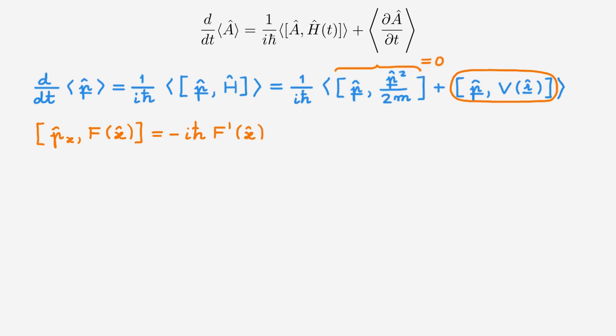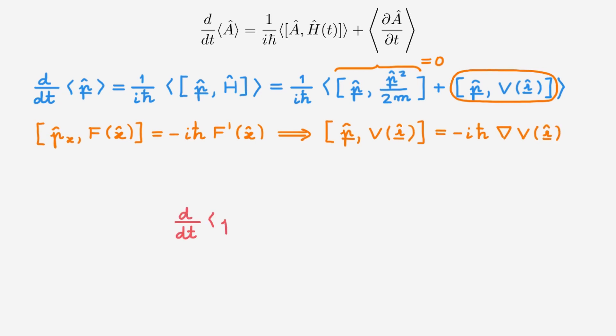Using this result, in our case the commutator between p and the potential V is equal to −iℏ times the gradient of the potential. Going back to the time derivative of the expectation value of the momentum operator, we find that it's equal to minus the expectation value of the gradient of the potential. This is the Ehrenfest equation for momentum. It probably looks pretty familiar, but before we discuss why, let's summarize the theorem.